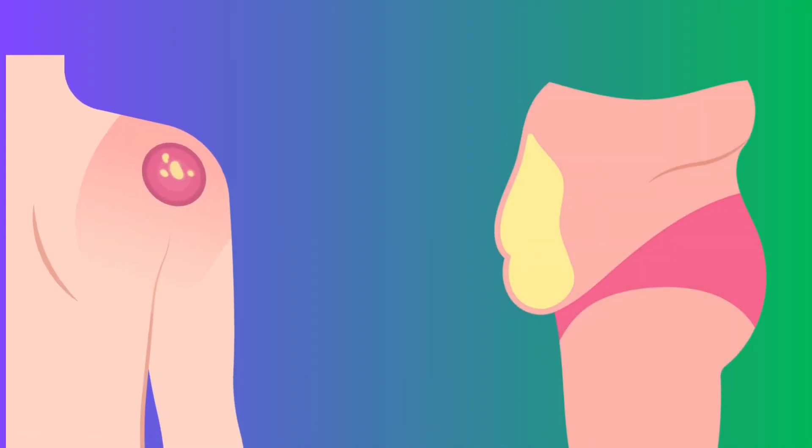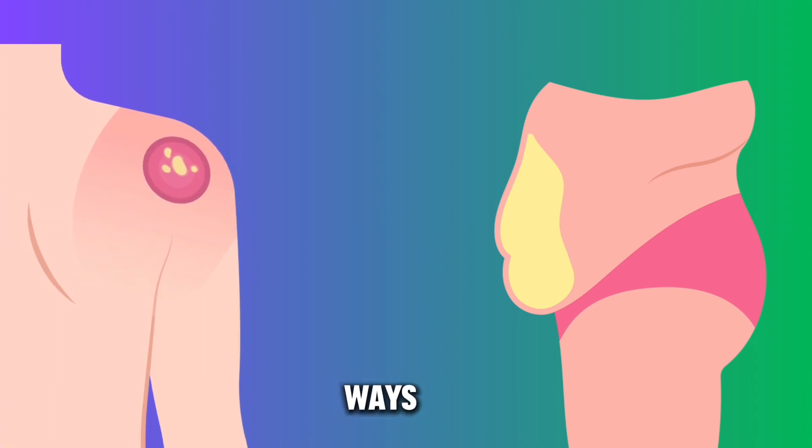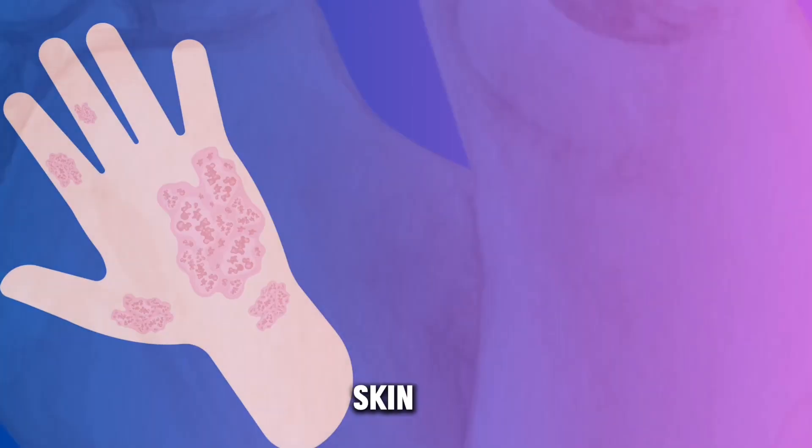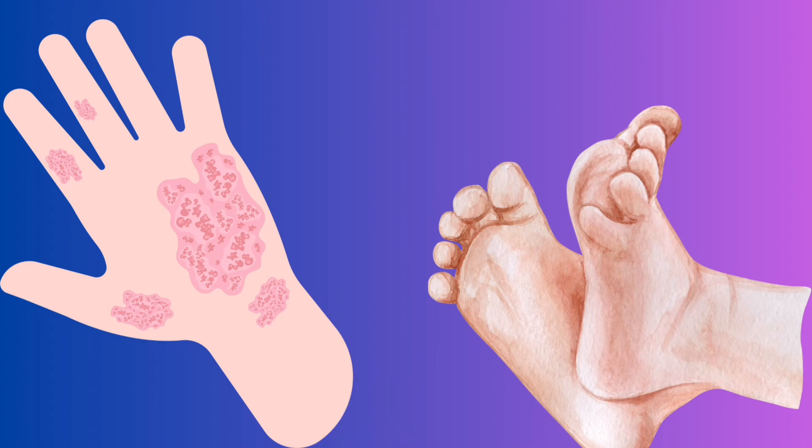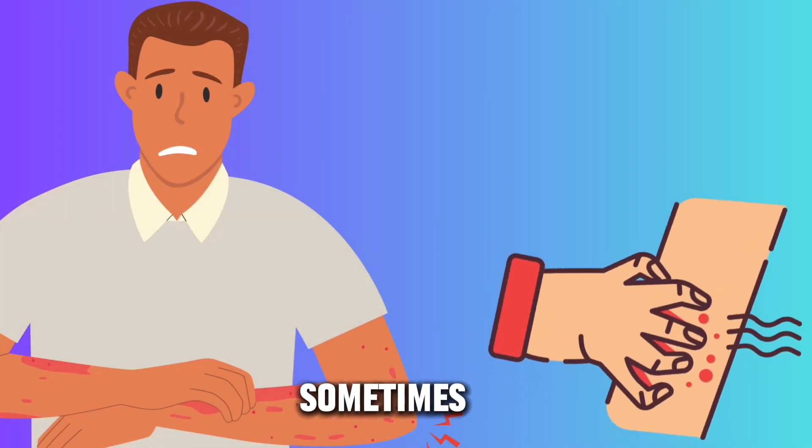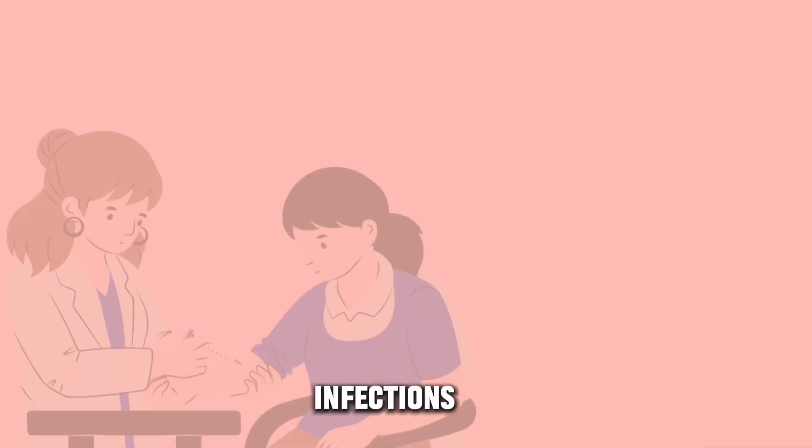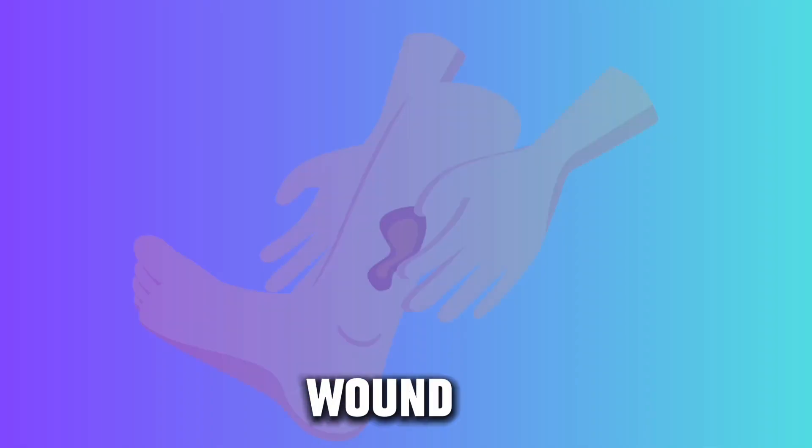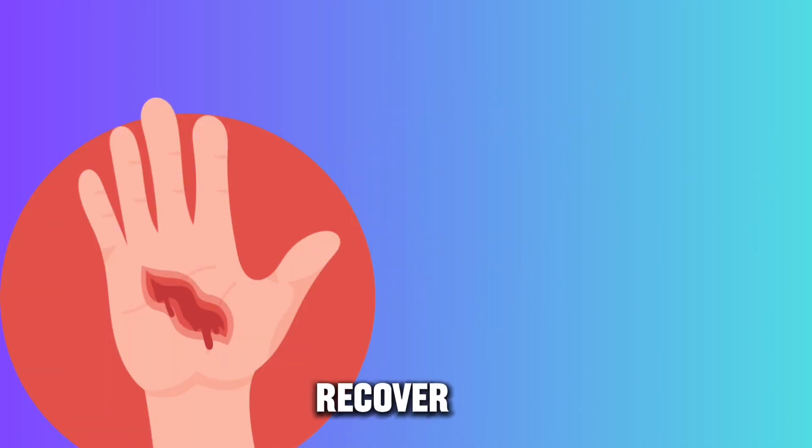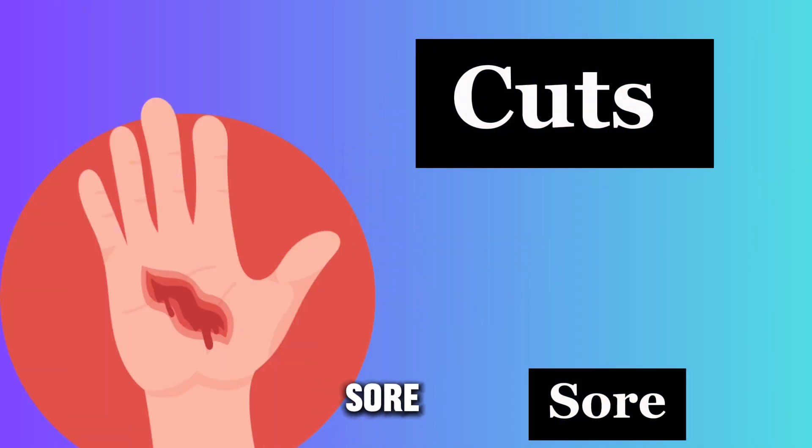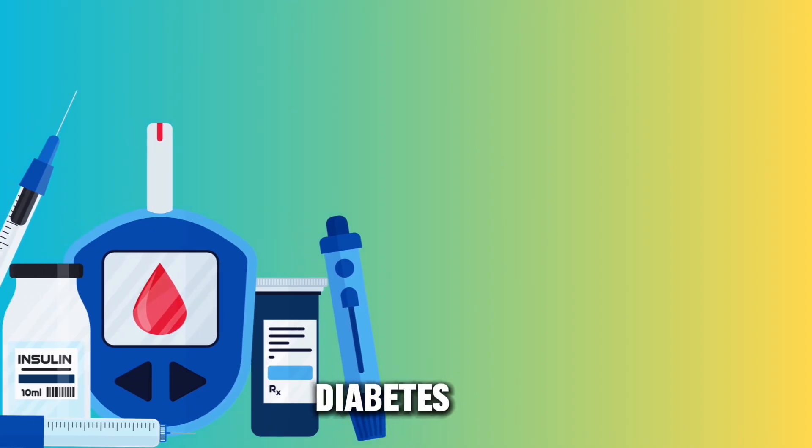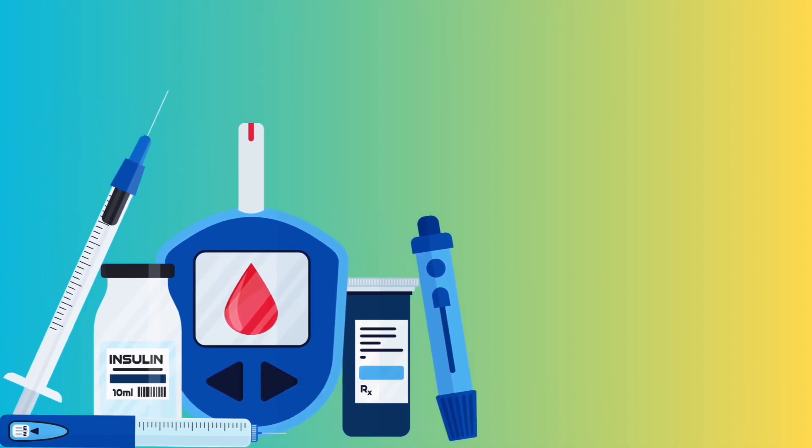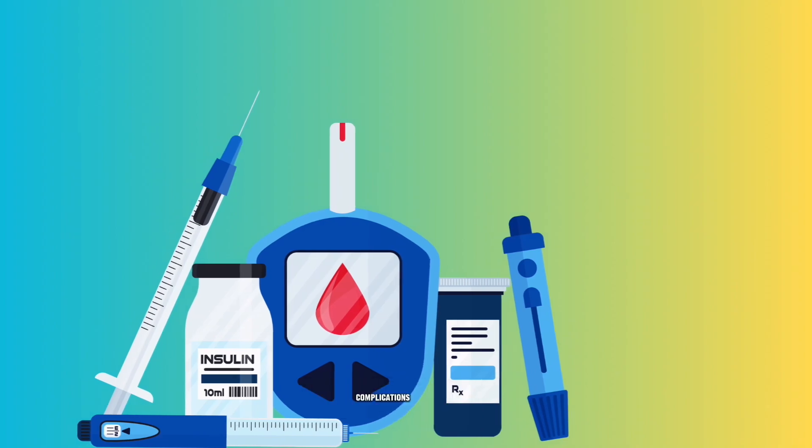Diabetes can affect the skin in several ways. It might cause dry skin, particularly on the hands and feet, and sometimes lead to itching or even skin infections. High blood sugar levels can also contribute to slow wound healing, making it harder for skin to recover from cuts or sores. Detecting diabetes early can significantly reduce the risk of developing complications.